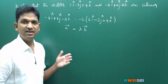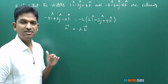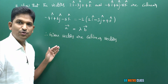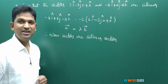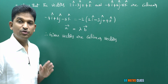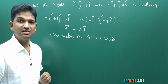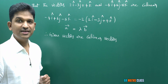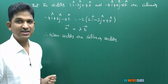Therefore, the given vectors are collinear vectors. This is a very easy question. Now we are going to do the other three problems in this class, and all three problems are related to direction cosines of a vector.